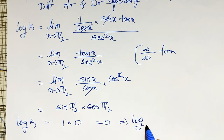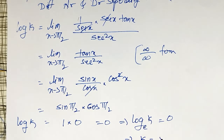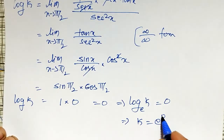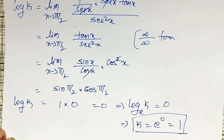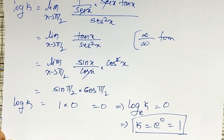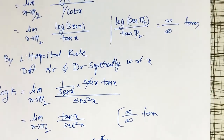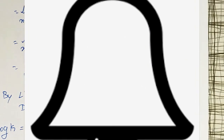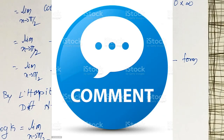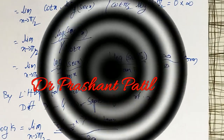This implies log k to the base e equals 0, which means k equals e to the power 0, that is equal to 1. Like this we evaluate limits as x tends to pi by 2 by converting them into 0 by 0 or infinity by infinity form, then applying L'Hôpital's rule. Some more examples will be evaluated in my next videos. Please subscribe my channel, hit the bell icon for notifications, like, comment, and share this video. Thank you friends.